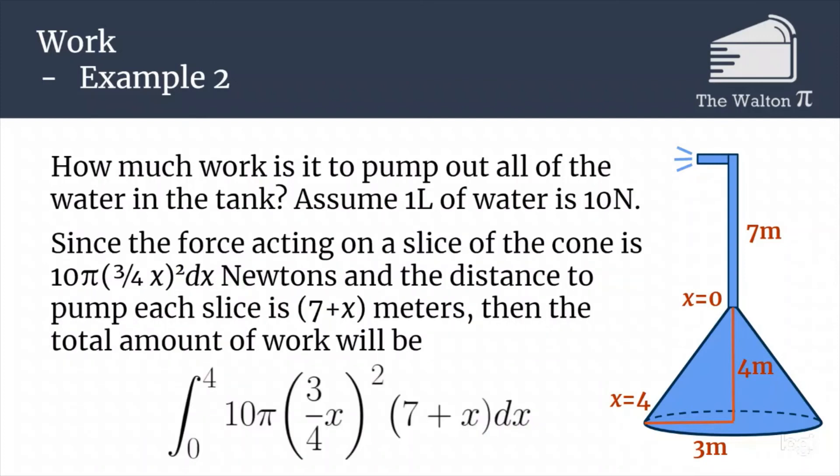Since the force acting on a slice is 10 pi times (3/4 x) squared dx and the distance is 7 plus x, we multiply those two together and put that into an integral. It'll be the integral from 0 to 4, because our x values will range between 0 and 4. So integral from 0 to 4 of 10 pi times (3/4 x) all squared times (7 + x) dx.